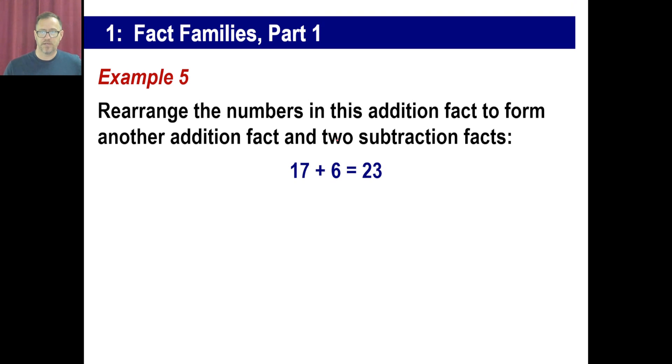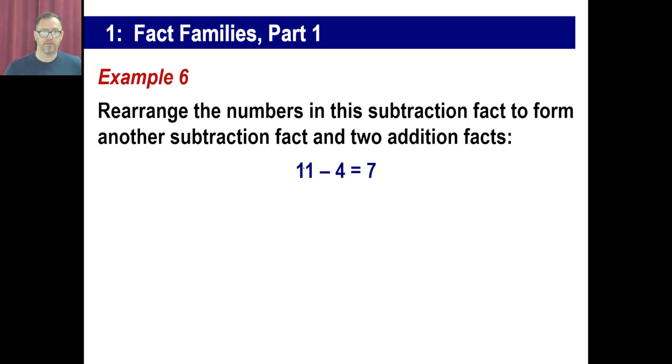All right. Here's another one. Rearrange the numbers in this addition fact to form another addition fact and two subtraction facts. Well, let's do the first, another addition fact first. Well, obviously, with the commutative property, it doesn't matter what order you add stuff in. You still get the same thing, right? So, you could say 6 plus 17 is 23. That's an addition fact. Two subtraction facts. You could say 23 minus 6 is 17. Or 23 minus 17 is 6. There you go. That's an easy one to do in your problem in your book.